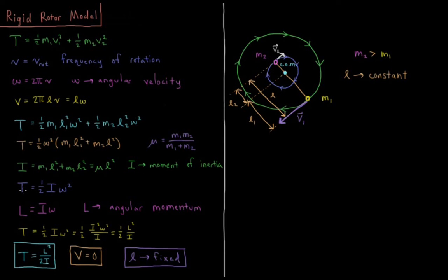In angular terms, the kinetic energy of rotational motion is one-half moment of inertia times angular velocity squared. We also have a quantity called angular momentum. Angular momentum is the moment of inertia times angular velocity, which is the analog to linear momentum p, equal to mass times velocity. So angular momentum equals the moment of inertia times angular velocity.